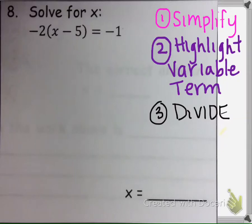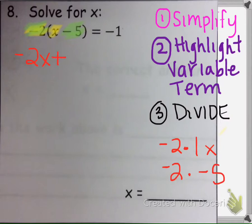Our first step is to simplify. We're going to take this negative 2 and multiply it to the x. Negative 2 times 1 is negative 2x. Then we have negative 2 times negative 5. So negative 2 times negative 5 is positive 10.